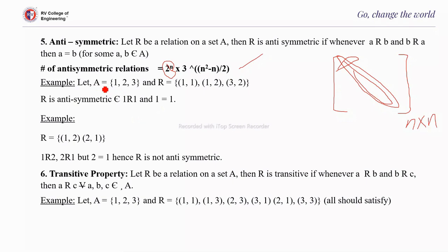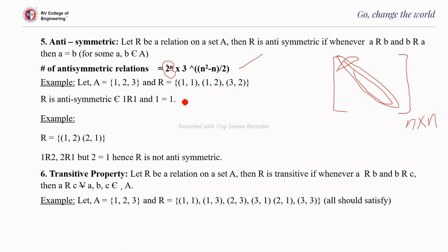Example: suppose A = {1, 2, 3} and R = {(1,1), (1,2), (3,2)}. Checking (1,1): 1 is related to 1 and 1 equals 1, so it satisfies anti-symmetric. For (1,2): there is no (2,1) in R, so it satisfies. For (3,2): there is no (2,3) in R, so it satisfies. Therefore, this is an anti-symmetric relation.